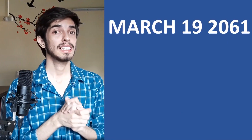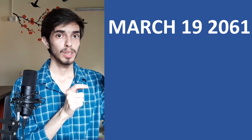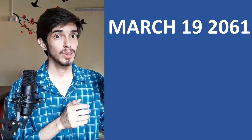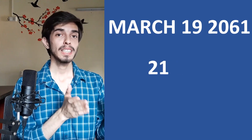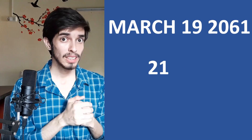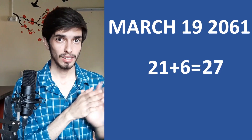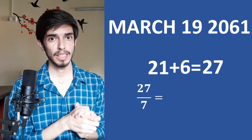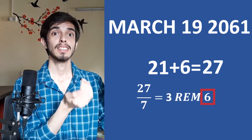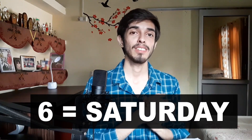Now let's see this trick in action: calculate the day of the week of March 19, 2061. The month code for March is 2. The date is 19. Add them: 2 plus 19 is 21. Now add the year code, which is 6: 21 plus 6 is 27. Divide by 7: 7×3 is 21, with a remainder of 6. The code 6 is Saturday. So on March 19, 2061, it will be a Saturday.